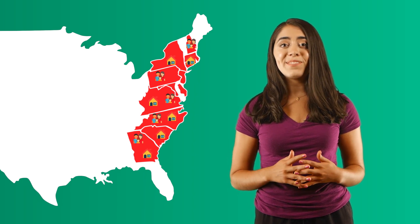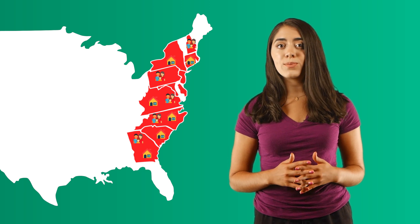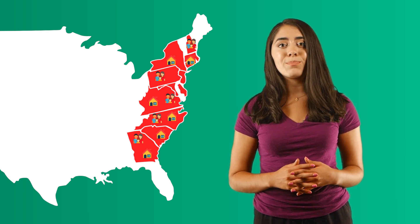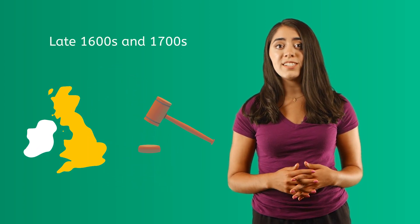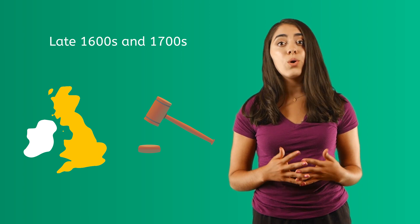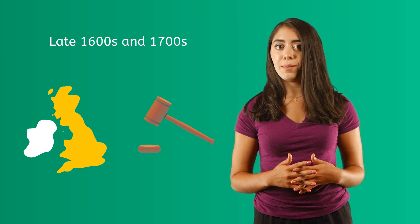As the colonists continued to settle into their new homes and build families and businesses, they began to find that their needs and wants were quite different from those of the British back home. Throughout the late 1600s and the 1700s, the British passed new laws preventing the colonists from controlling where their products were shipped, as well as what products were shipped in from Europe. They also decided to prevent westward expansion, forbidding the colonists from exploring new land and growing past a certain point.